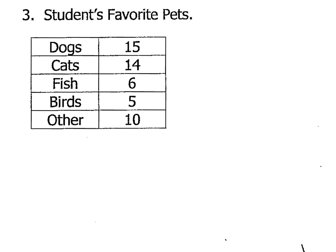Again, one of the first things we need to do is find the percent for each category. To do that, we need to find the total number involved. We're going to add up the numbers: 15 plus 14 plus 6 plus 5 plus 10. When I add those up, I get a total of 50. So to find the percent for the first category, I'm going to do 15 divided by 50, and I get 0.3, which is 30%.